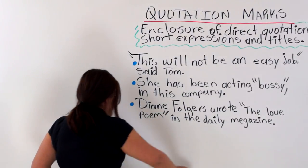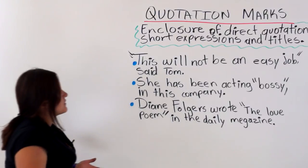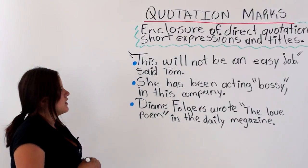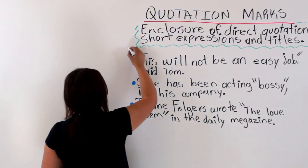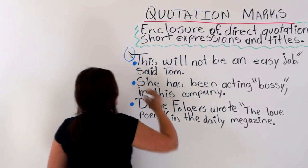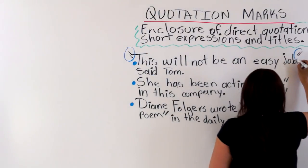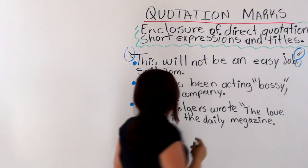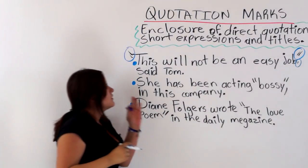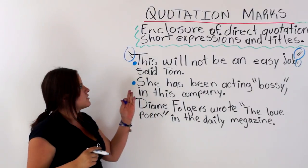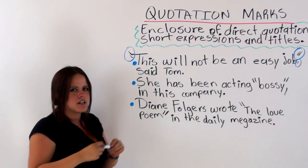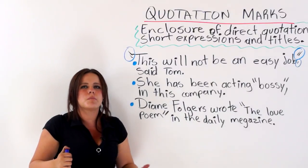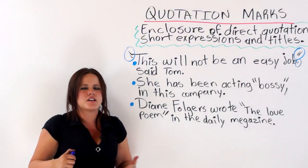So the first example I have here says: 'This will not be an easy job,' said Tom. We are enclosing a direct quotation followed by a comma: 'This will not be an easy job,' said Tom. What is a direct quotation?